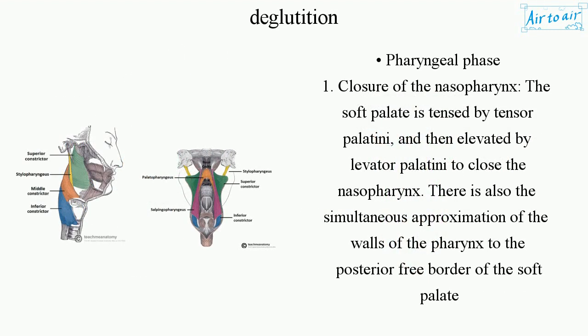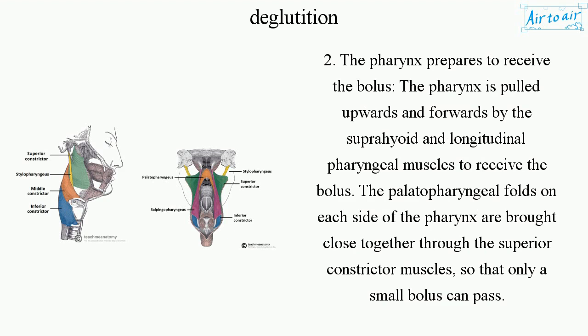Pharyngeal phase: 1. Closure of the nasopharynx — the soft palate is tensed by tensor palatine and then elevated by levator palatine to close the nasopharynx; there is also simultaneous approximation of the walls of the pharynx to the posterior free border of the soft palate. 2. The pharynx prepares to receive the bolus — pulled upwards and forwards by the suprahyoid and longitudinal pharyngeal muscles; the palatopharyngeal folds are brought close together through the superior constrictor muscles so that only a small bolus can pass.